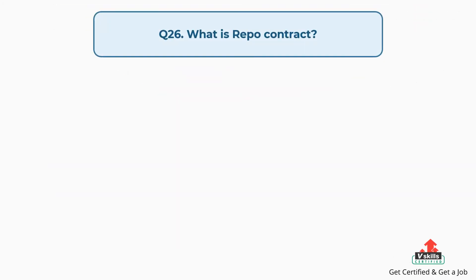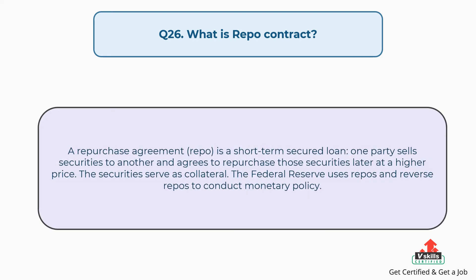Question number twenty-six: what is a repo contract? The answer is, a repurchase agreement (repo) is a short-term secured loan where one party sells securities to another and agrees to repurchase those securities later at a higher price. The securities serve as collateral. The Federal Reserve uses repos and reverse repos to conduct monetary policy.